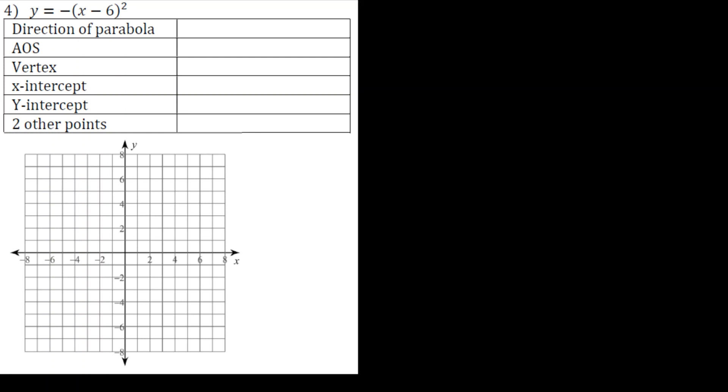The last problem on the independent practice for graphing a parabola. Let's take a look at the direction of the parabola. Once again, y equals a times x minus h squared plus k. So a equals negative one, so that means it opens down.